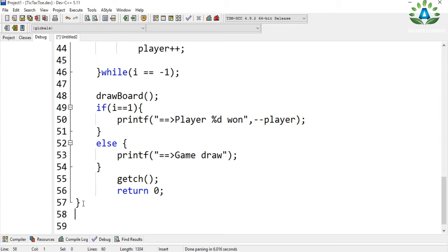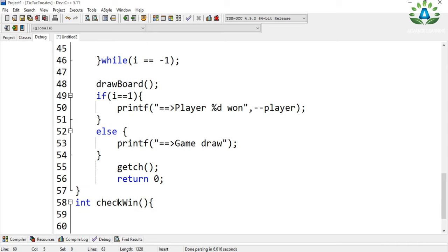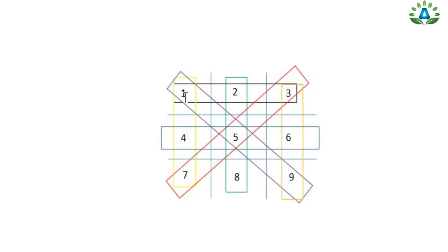Now let me define the checkWin function that I declared above. It returns an integer value. We check all winning combinations. If the value in position 1 equals the value in position 2 and position 3, then we have a winner and return 1. Similarly, if the values in those positions are equal, we have a winner.